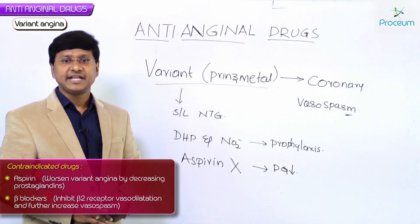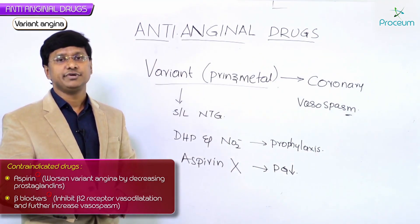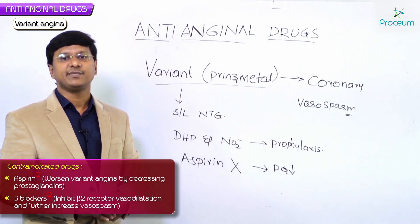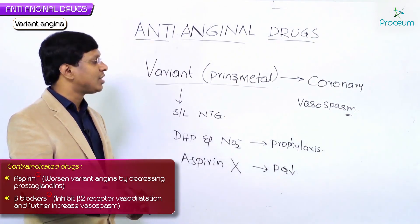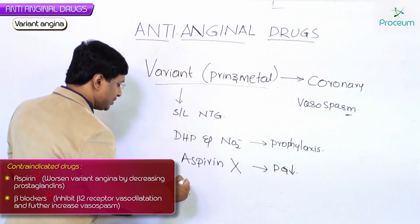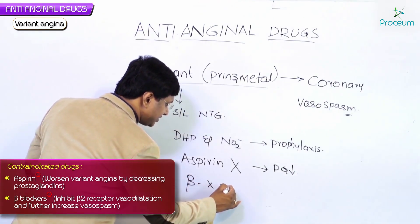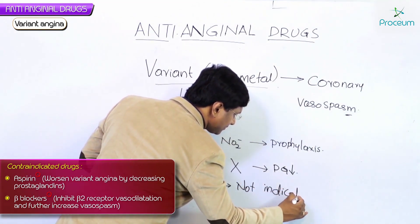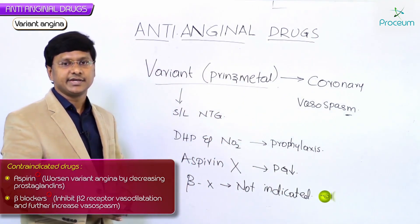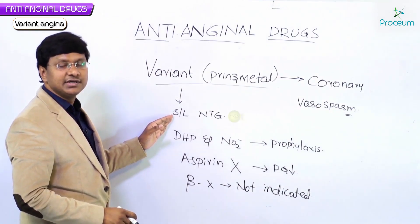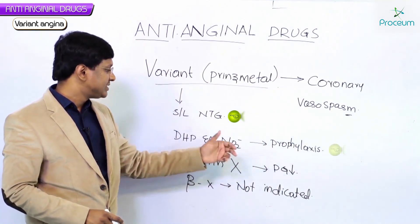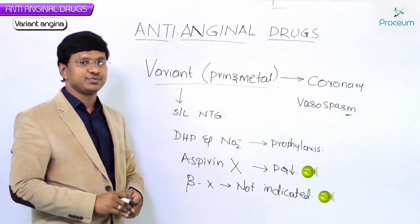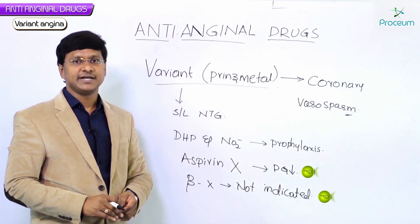Beta blockers also should not be given in individuals with variant angina. Beta blockers, by inhibiting the beta-2 receptor-mediated vasodilation, will further cause vasospasm and are therefore not indicated. So to summarize: sublingual nitrate is the drug of choice for acute attack; for prophylaxis, dihydropyridines and nitrates are used; and aspirin and beta blockers are not indicated in variant angina or Prinzmetal angina.